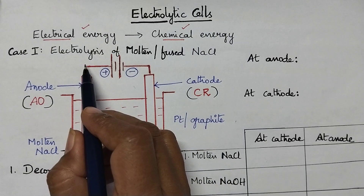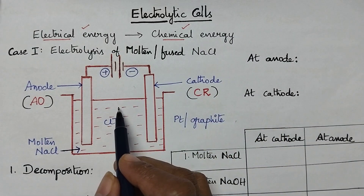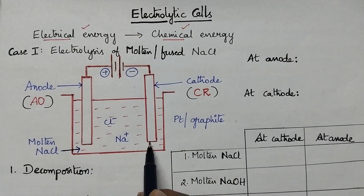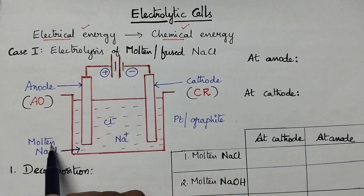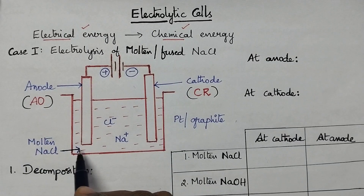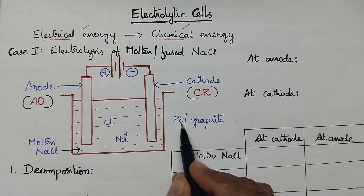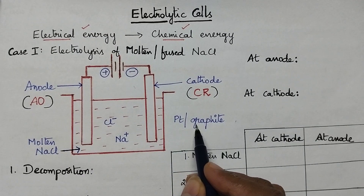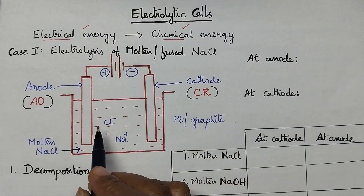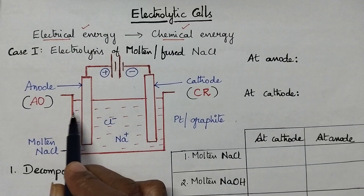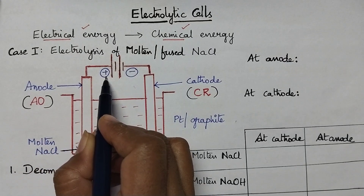Initially let us discuss about the electrolysis of molten or fused NaCl solution. An electrolytic cell consists of two electrodes dipped in an electrolytic solution and these two electrodes are connected to the battery. Here in this case the molten NaCl solution acts as the electrolytic solution and the two electrodes are made up of platinum or graphite. These two materials are inert in nature, that means they do not take part in a chemical reaction. Always the electrode which is present on the left hand side acts as the anode and it is connected to the positive terminal of the battery.